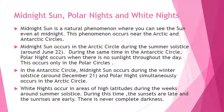White nights occur in areas of high latitudes during the weeks around summer solstice. During this time, the sunsets are late and the sunrises are early. There is never complete darkness.